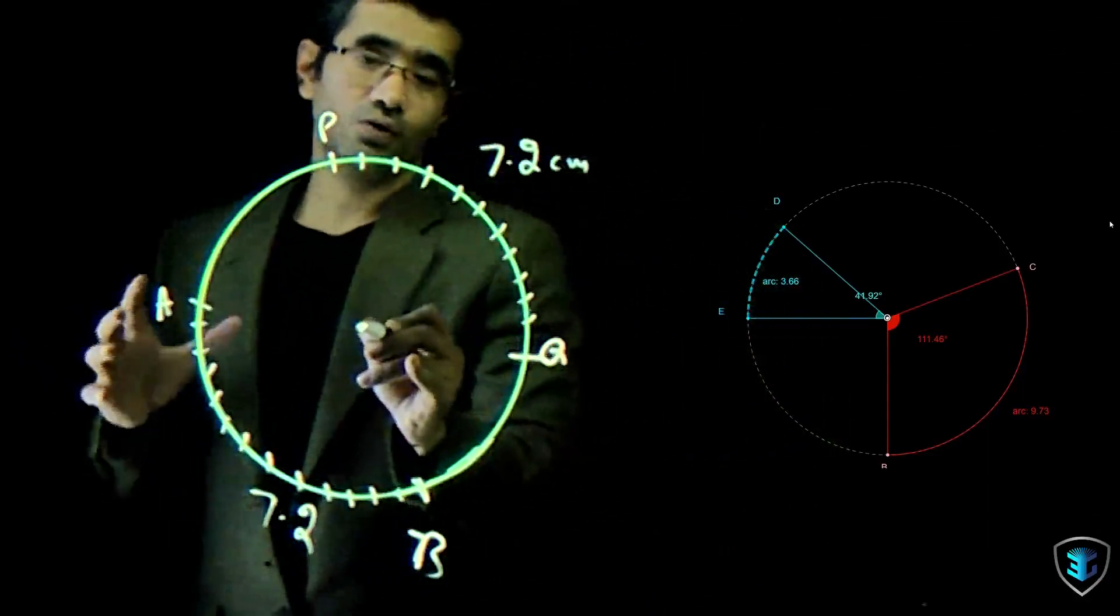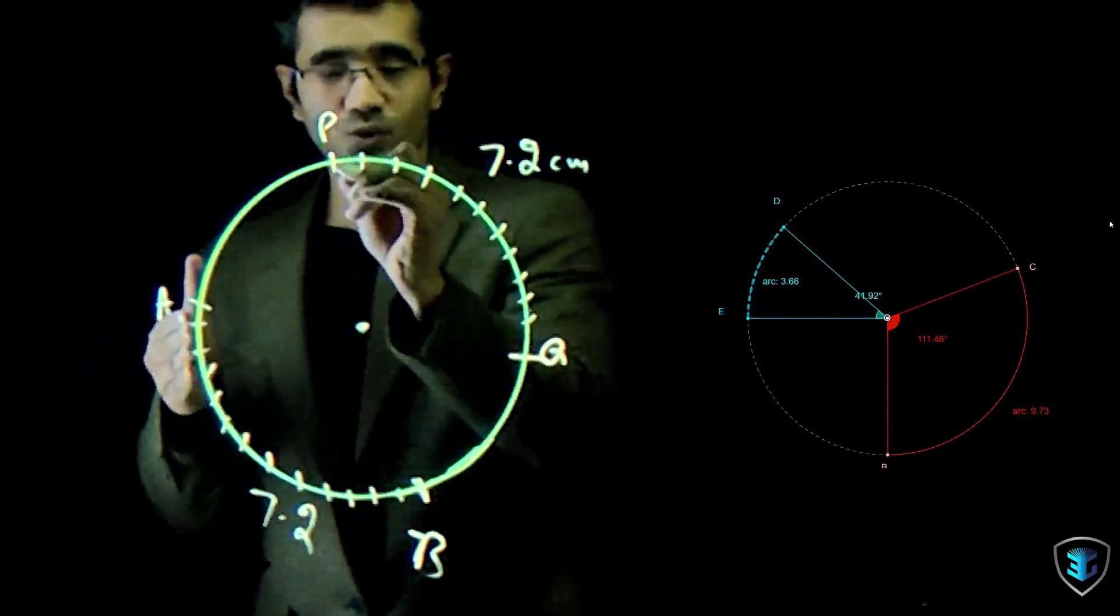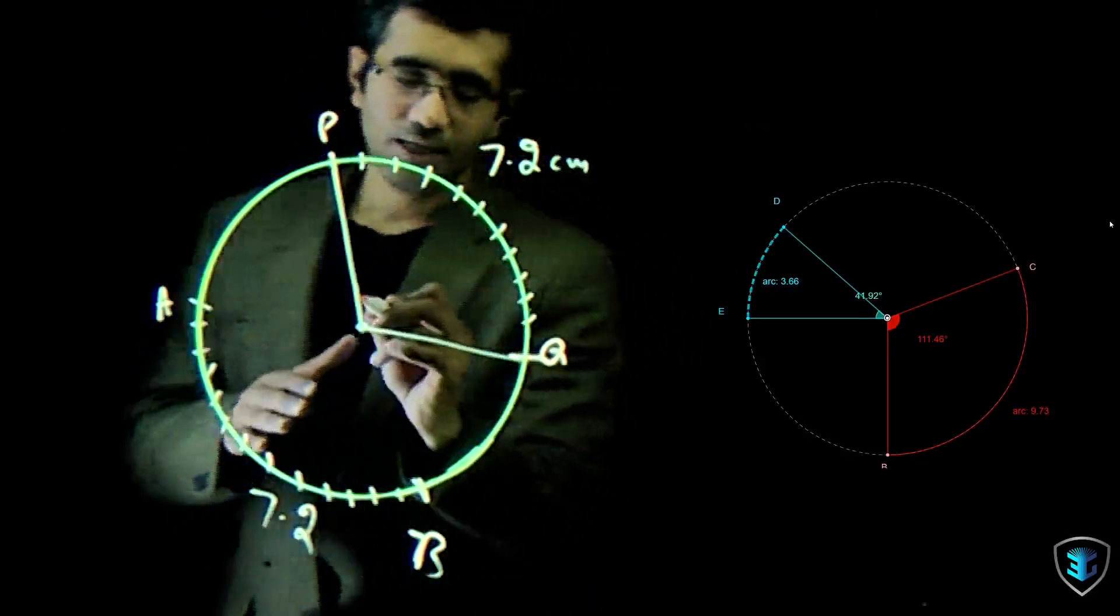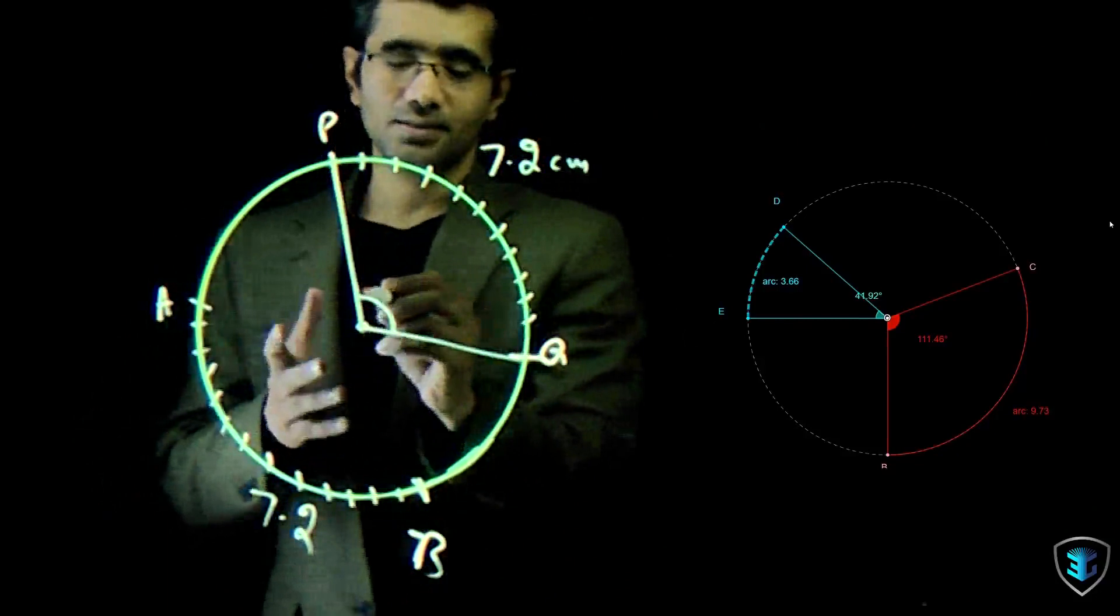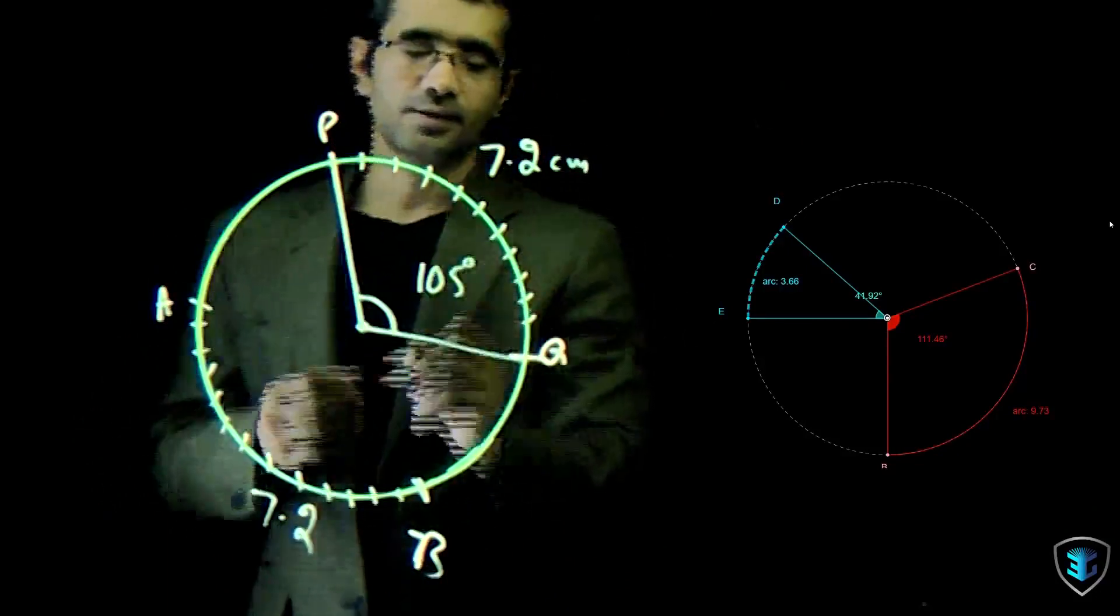So now what happens if I say that the arc PQ subtends an angle at the center. It means if I join point P to the center and join point Q to the center again, it makes an angle at the center. Let's say this angle is equal to 105 degrees.